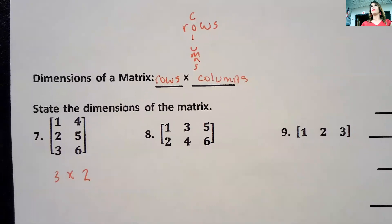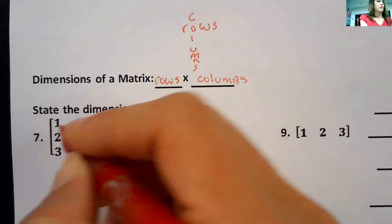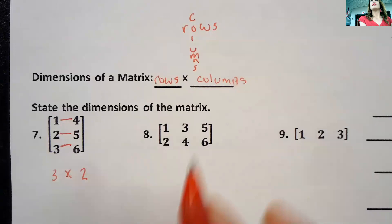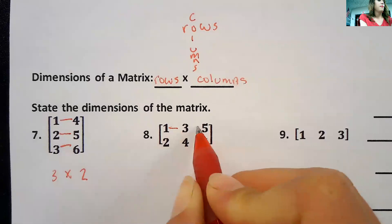It's got three rows. Rows go sideways, columns go up and down. So three rows and two columns. This one, what is it? Yep, it has two rows and three columns. So it's a two by three matrix.